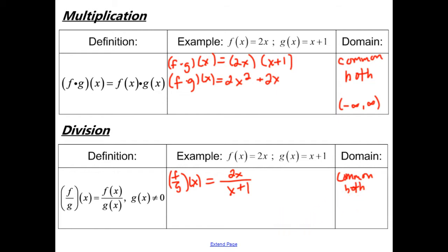But x cannot, this denominator cannot be equal to 0. So the condition is that x plus 1 cannot equal 0. So that means that when you subtract 1 from both sides, we have that x cannot equal negative 1. So we want to say that it is negative infinity to positive infinity, except x cannot equal negative 1.